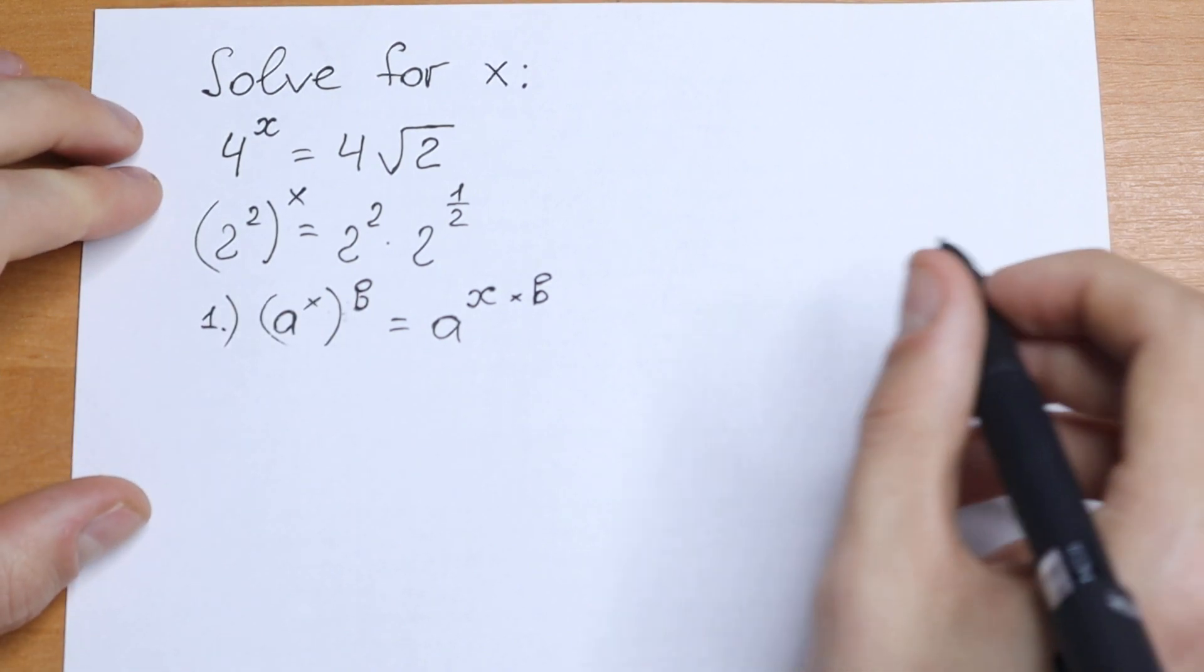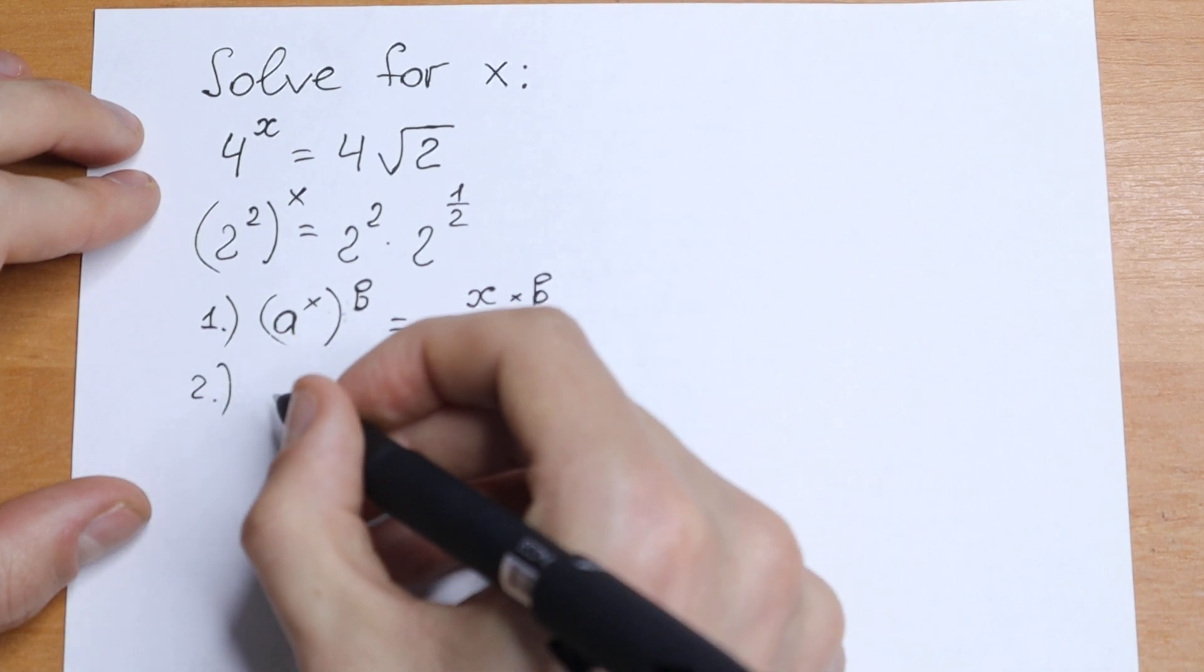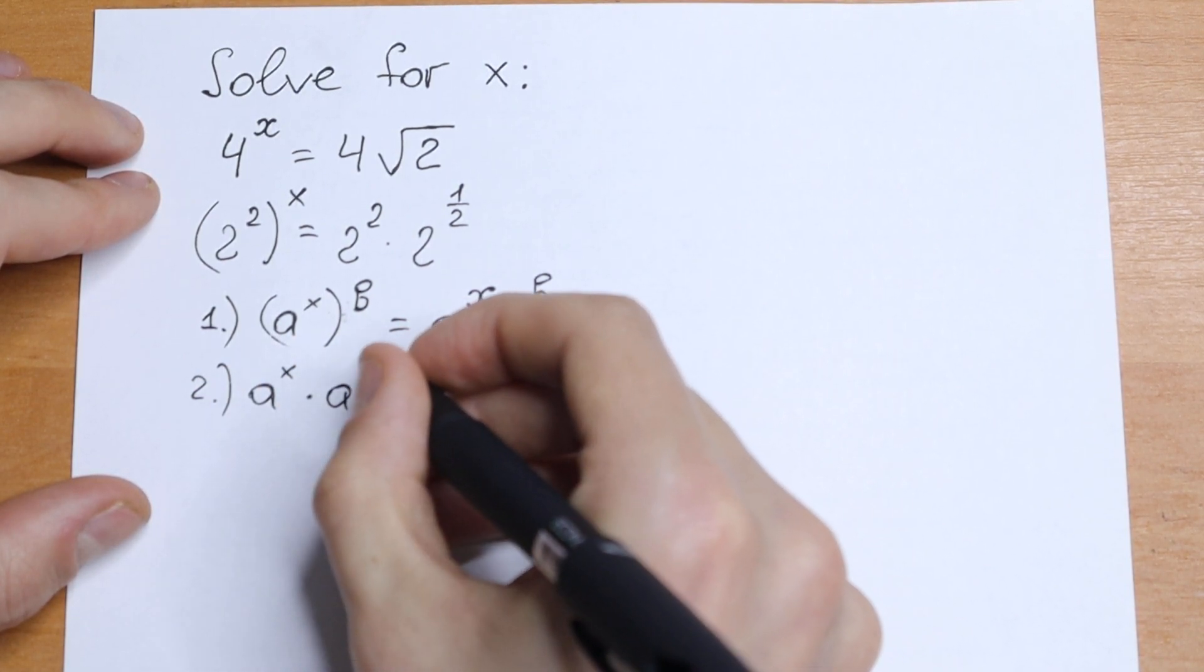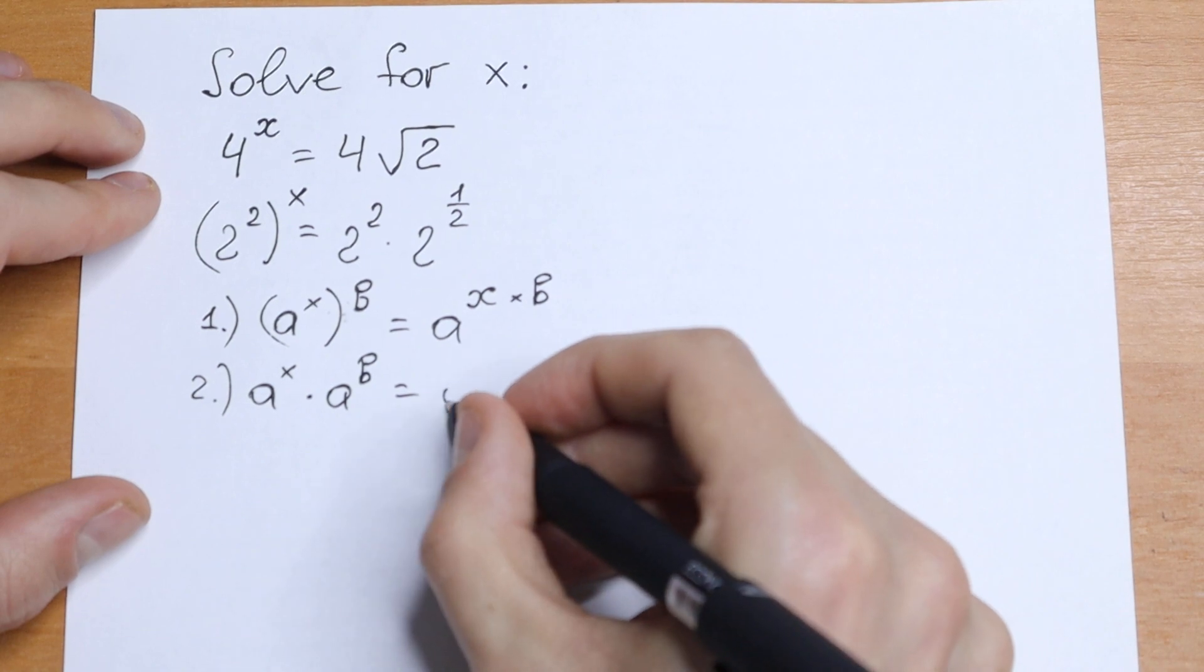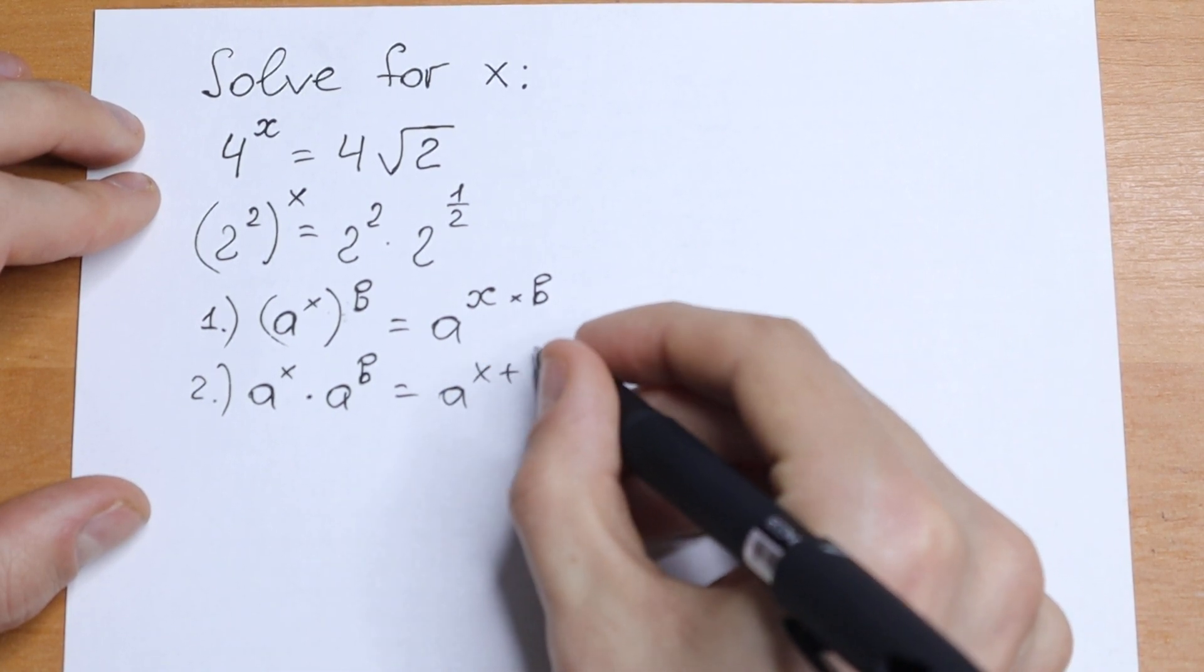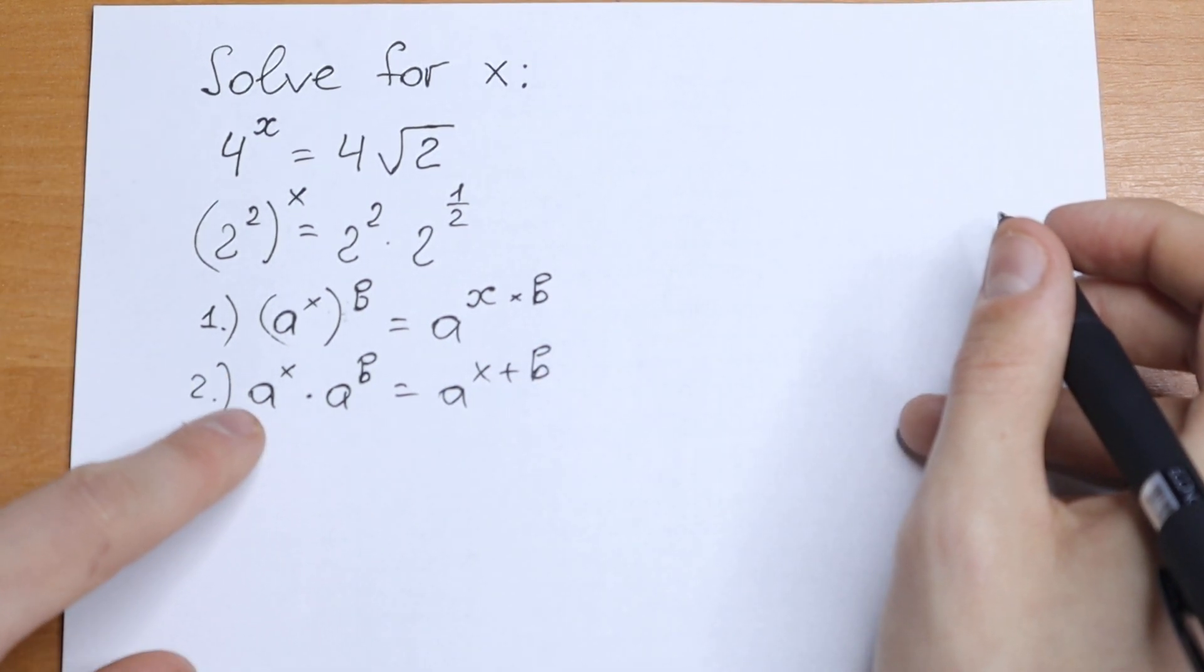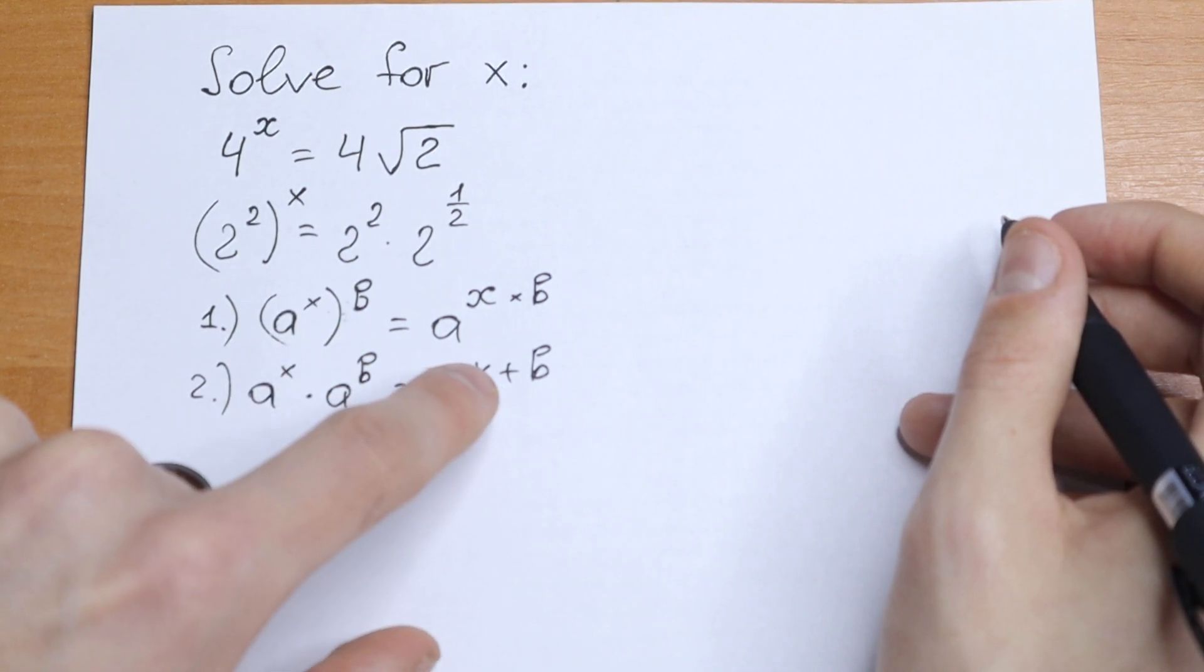And the second rule: if we have a to the power x times a to the power b, we can write it as a to the power x plus b. So when multiplying, we need to add the powers.